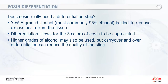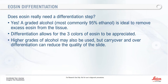Eosin does need to be differentiated — a graded alcohol, most commonly 95%, is ideal to remove excess eosin from tissue. This allows you to see the three different shades of pink, because too much eosin, just like too much hematoxylin, results in a bland, one-color appearance. Higher grades of alcohol can be used following eosin, but remember it's the water content doing the differentiation — if you go straight from eosin to 100% alcohol, that will impact your coloration.